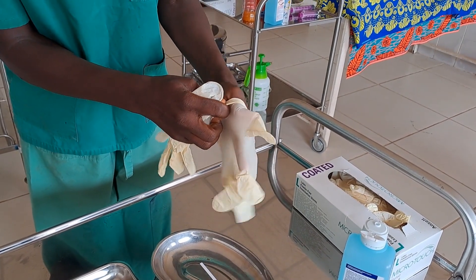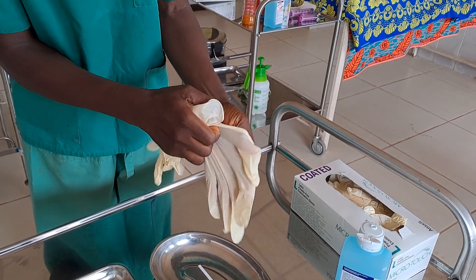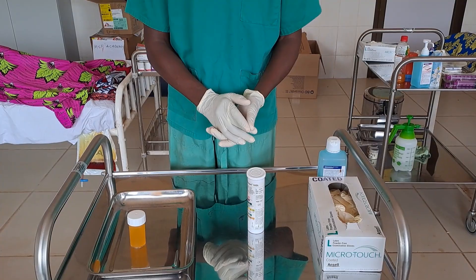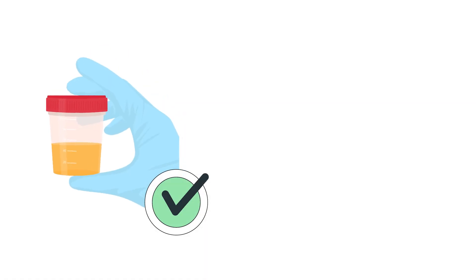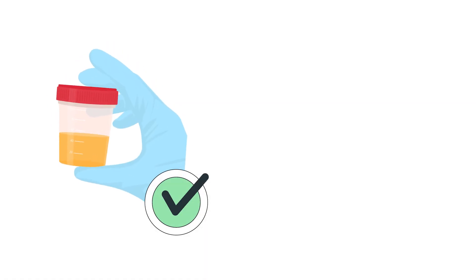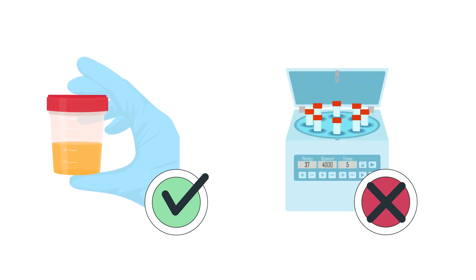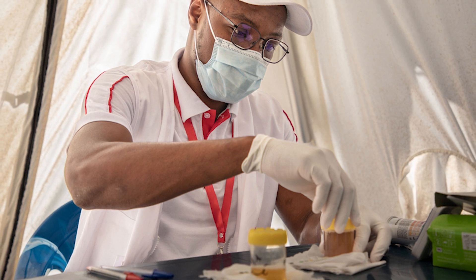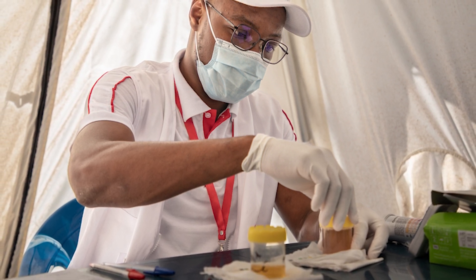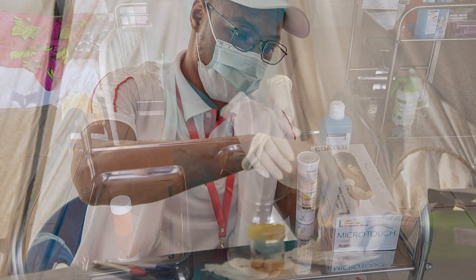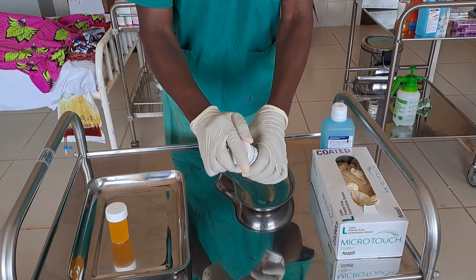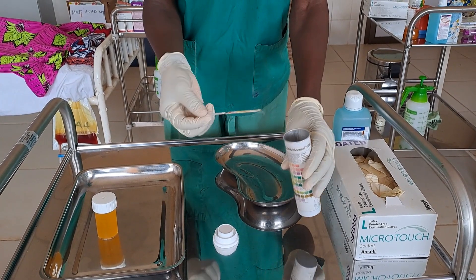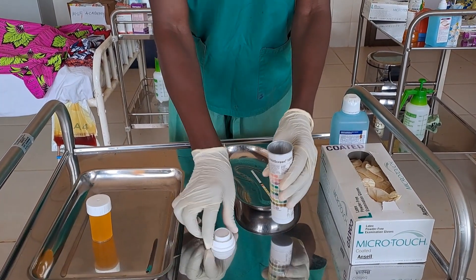Aprons prevent soiling of your uniform from splashes of body fluids; therefore, an apron could be worn. Place the sample container on a stable surface. Mix the urine sample thoroughly by shaking it to prevent layering of any sediment. Do not centrifuge the sample. Observe the colour, odour, and turbidity or aspects of the urine to document later. Remove a reagent dipstick from the container. Look to see if the dipsticks are discoloured — if yes, discard it and take another. Place the stick on the tray.